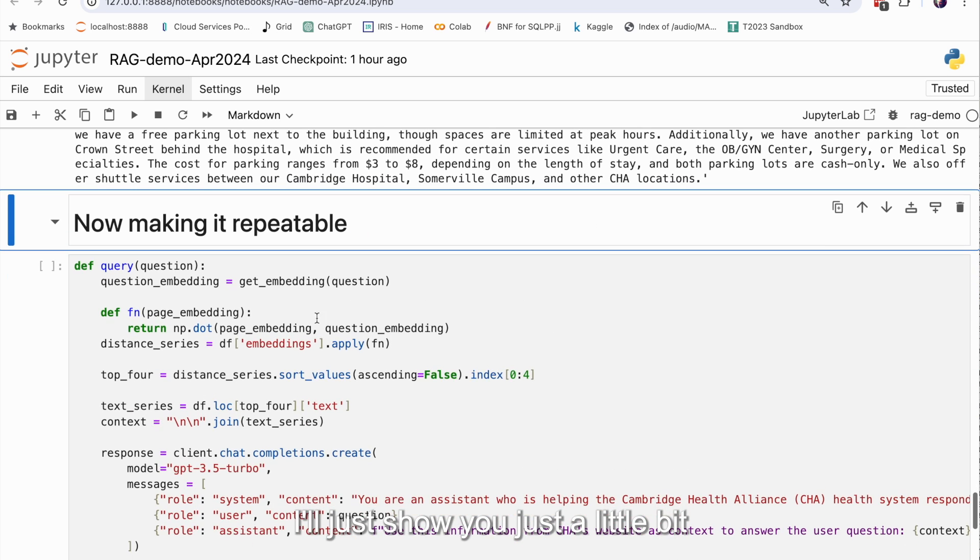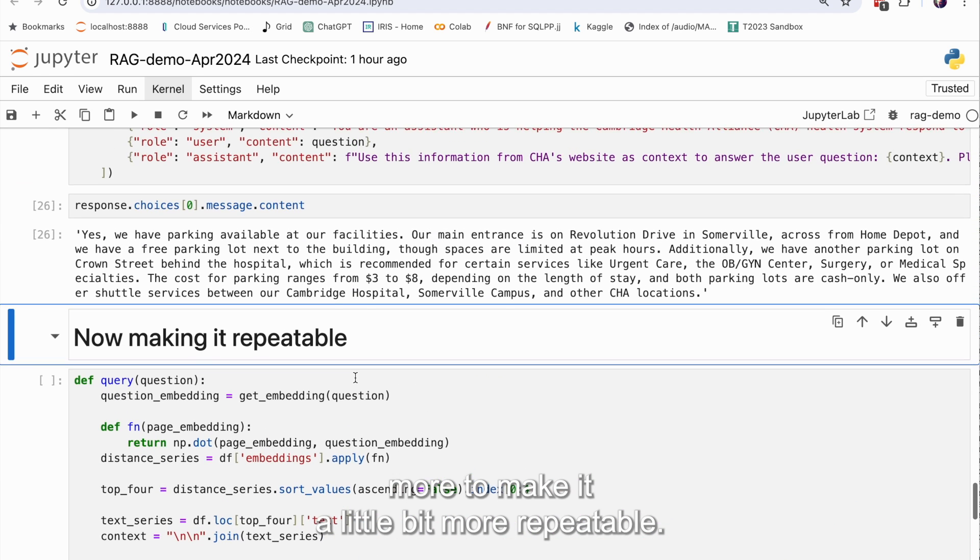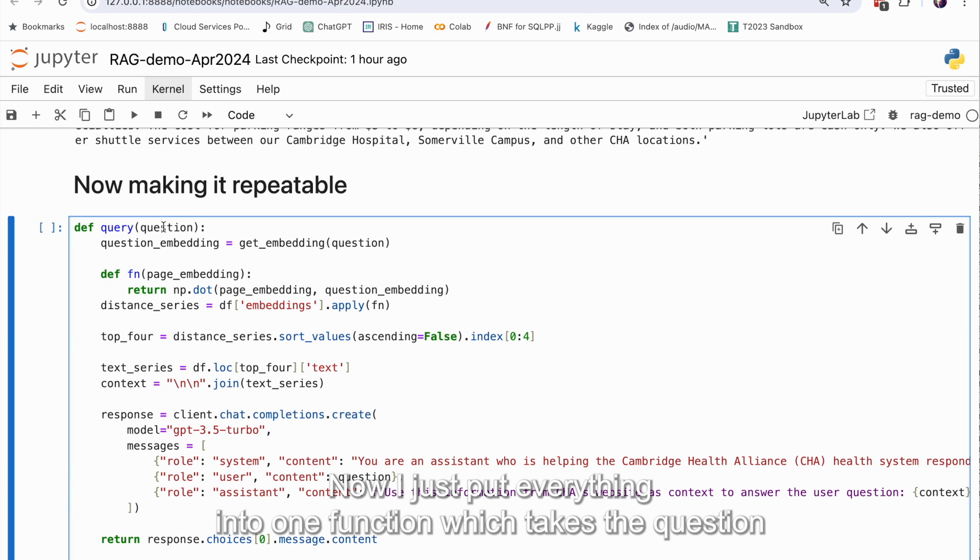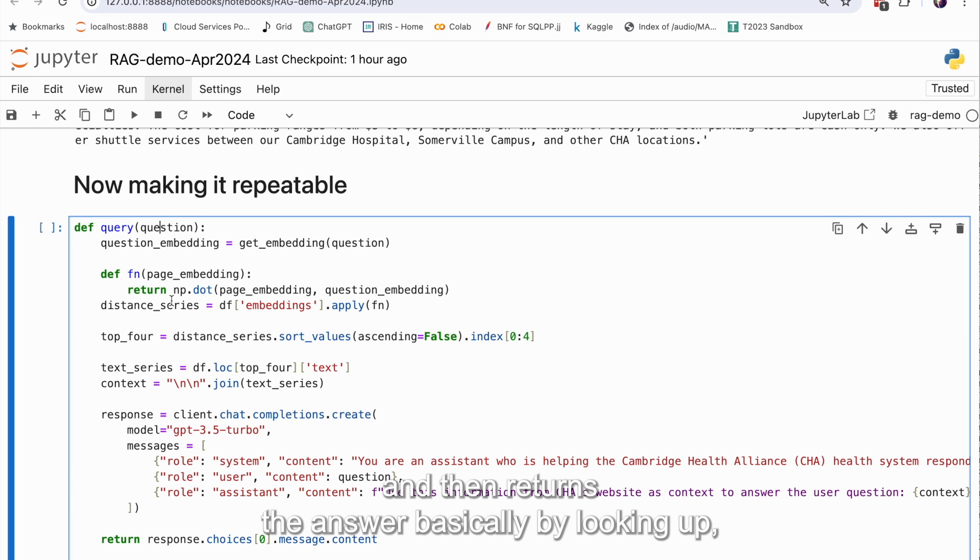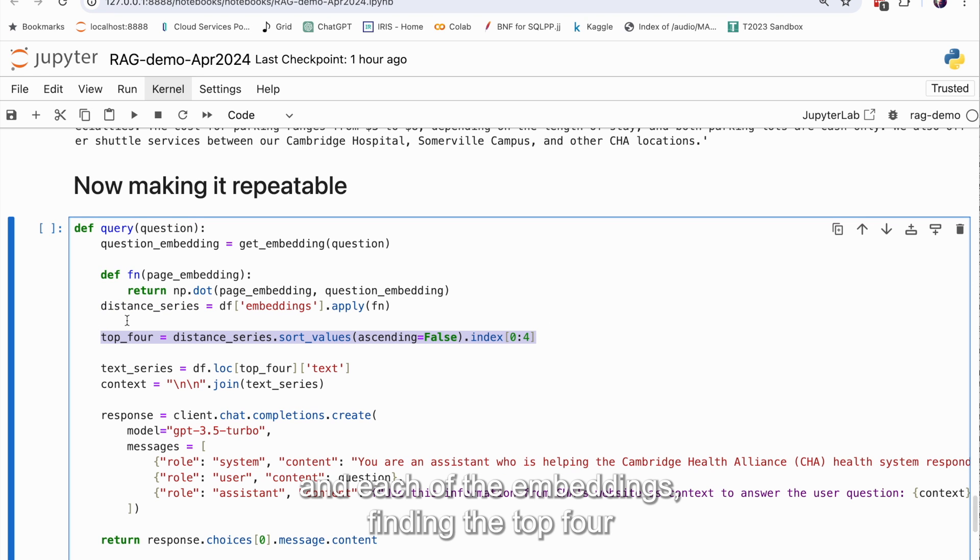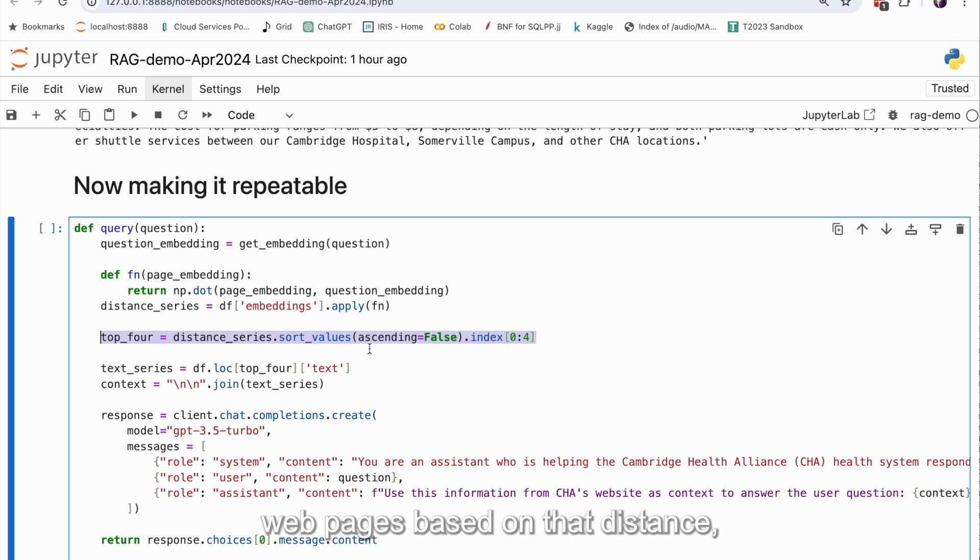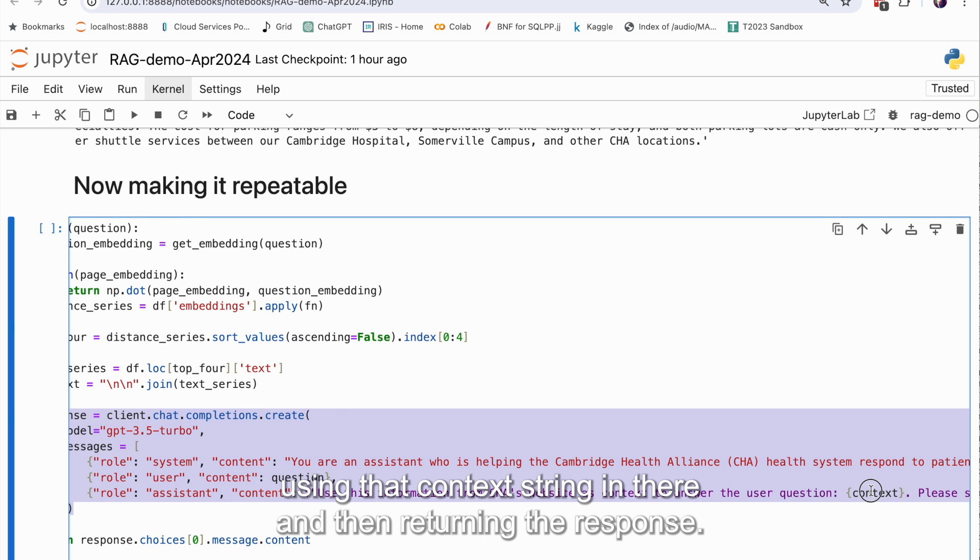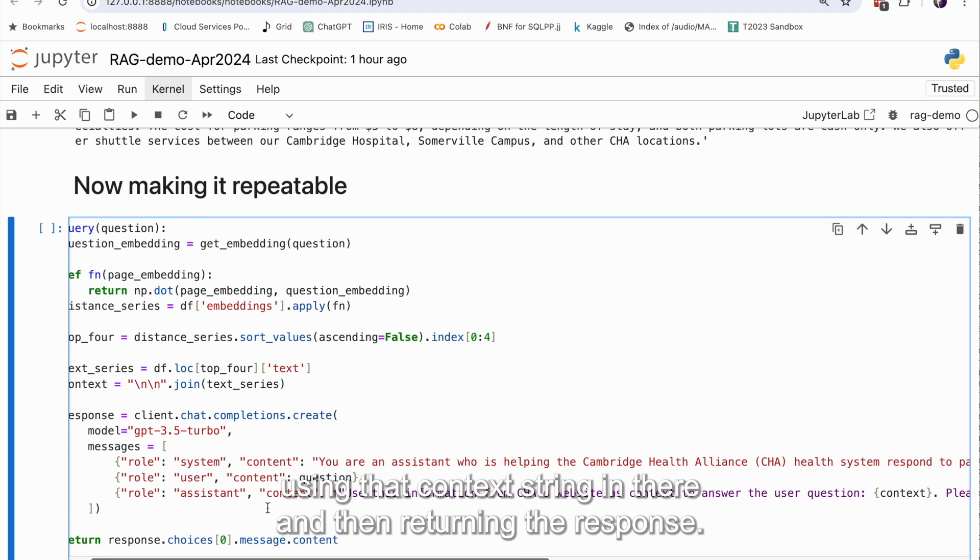I'll just show you just a little bit more to make it a little bit more repeatable. Now I just put everything into one function, which takes the question and then returns the answer basically by looking up, calculating the distance between that question and each of the embeddings, finding the top four web pages based on that distance, joining those together into this context string, asking the question just like we did before, using that context string in there, and then returning the response.